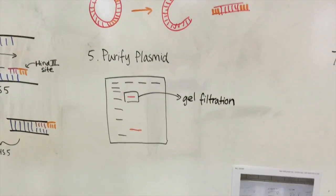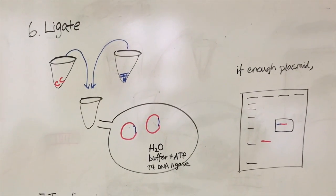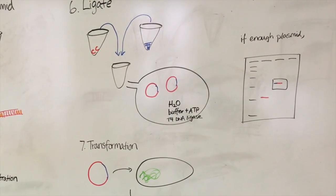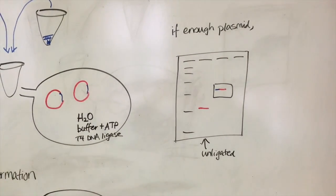Digest the target plasmid with the hind-3 restriction enzyme. Then, ligate the lice-5 gene into the digested plasmid with T4 DNA ligase. Confirm successful ligation of the lice-5 gene by running the ligated product on the gel with the unligated plasmid to compare the lengths.